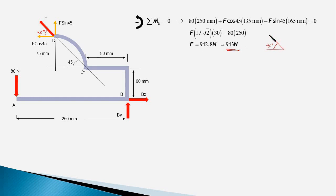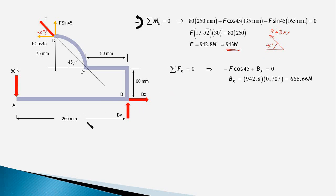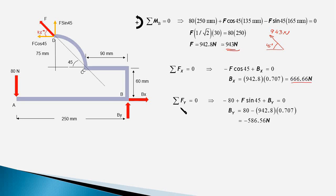The reaction force at D is 943 newtons at 45 degrees with the minus-x axis. Now to find Bx and By, we write the force equilibrium equations. From sigma F_x = 0: F cos45° acts in the minus-x direction and Bx acts in the positive-x direction. Substituting the value of F gives Bx = 666.66 newtons.